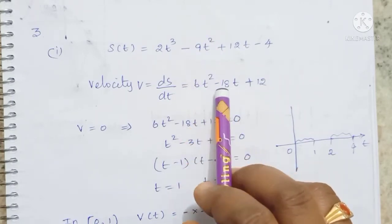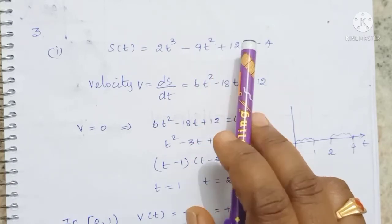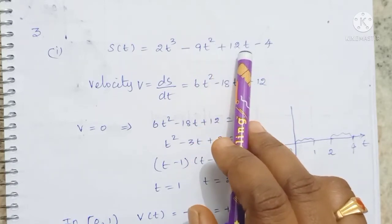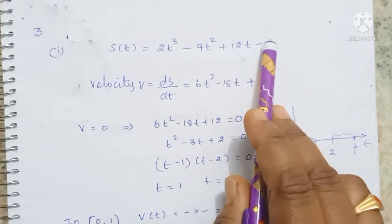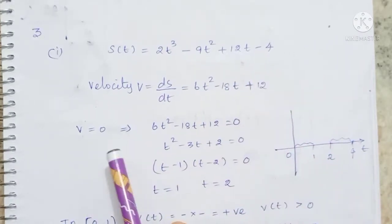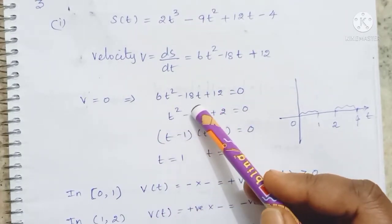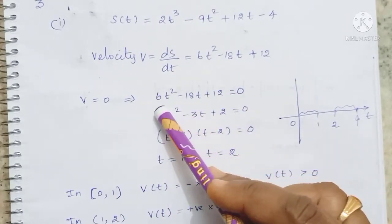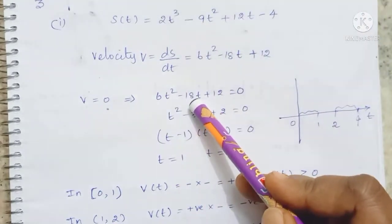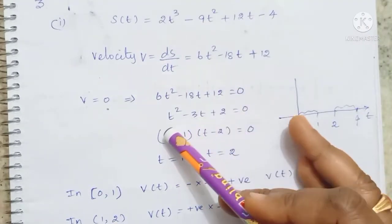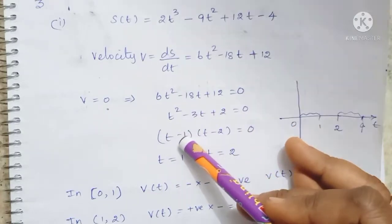Continuing the differentiation: minus 2 times 9 gives 18t, and the next term 12t differentiates to 12. The constant minus 4 differentiates to 0. So v equals 6t squared minus 18t plus 12. Setting v equal to 0: 6t squared minus 18t plus 12 equals 0. Dividing throughout by 6 gives t squared minus 3t plus 2 equals 0.